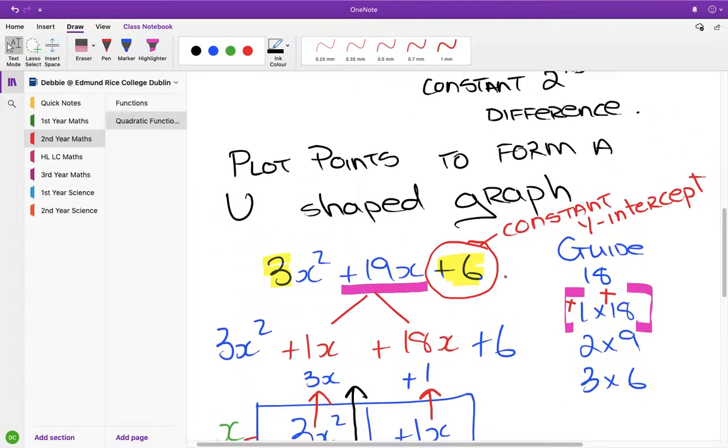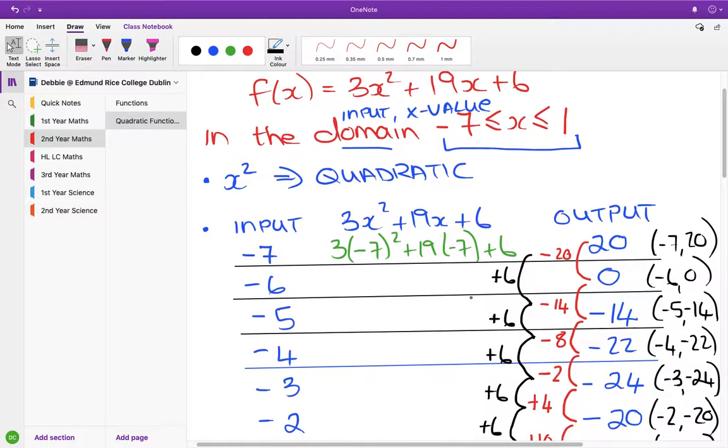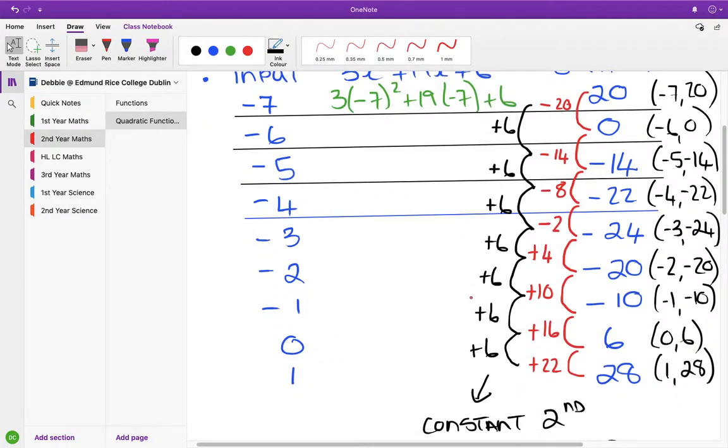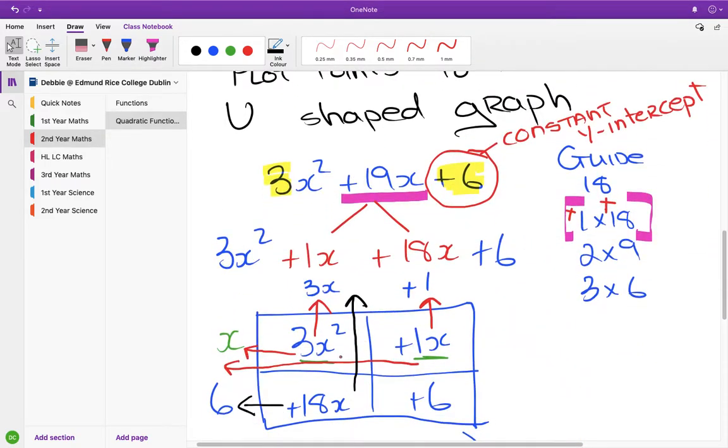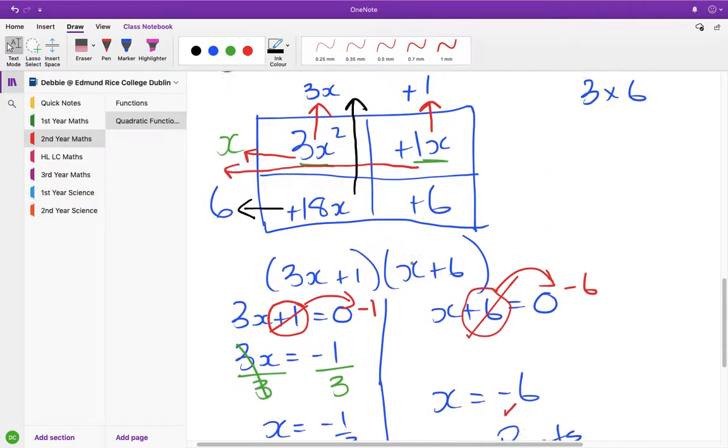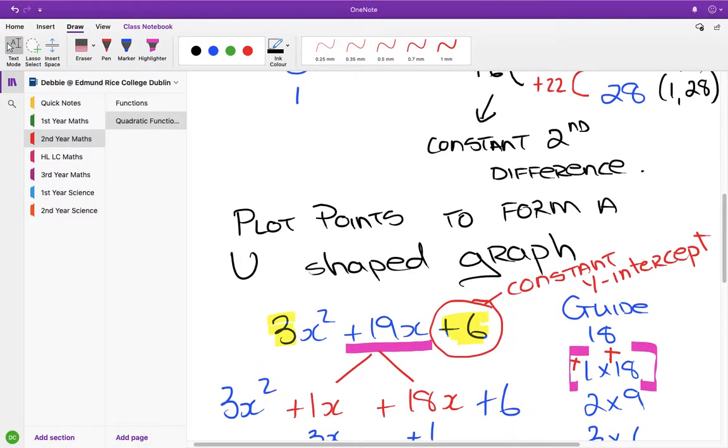Okay, so that is quadratic equations from a functions point of view, doing an input-output table, generating your graph, from a sequences and series point of view, looking at your constant second difference, from an algebraic point of view, picking out your roots, and then from a geometry point of view, looking at your y-intercept.